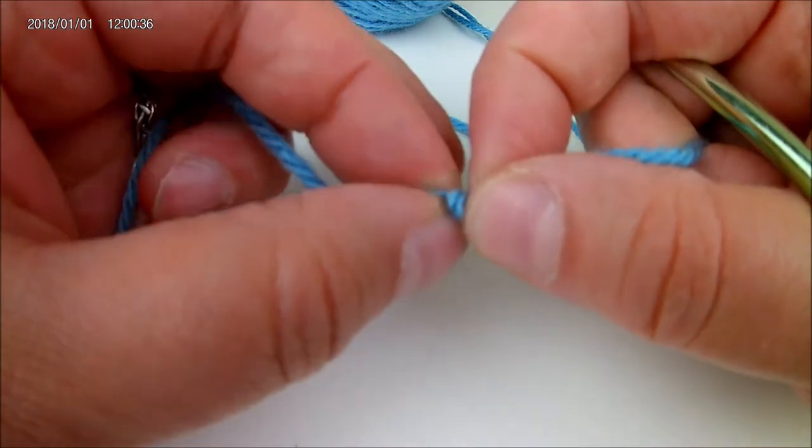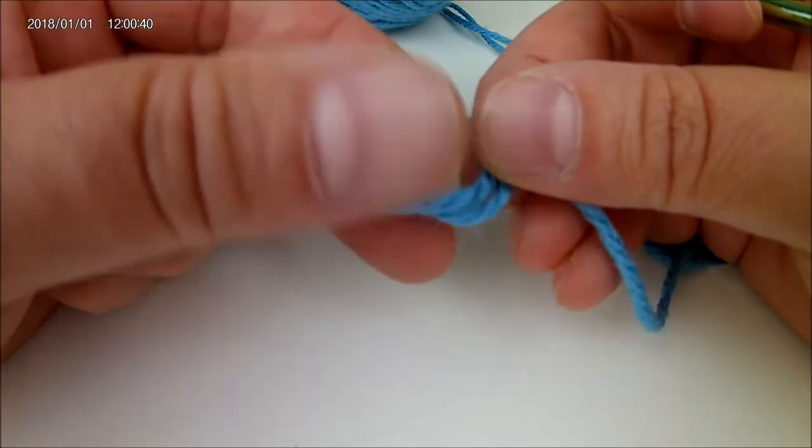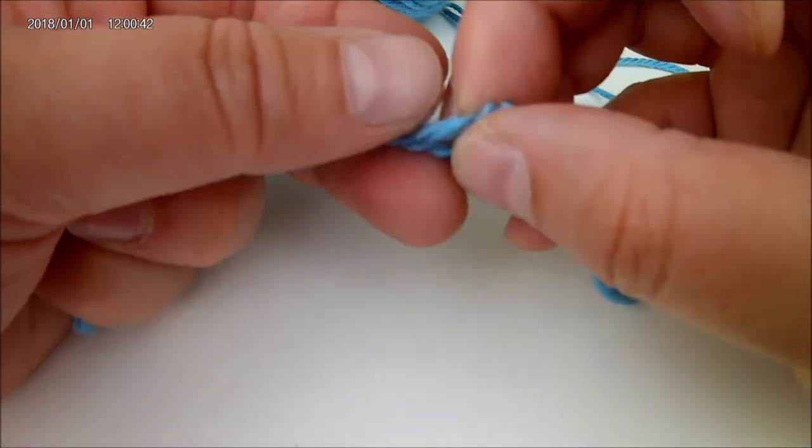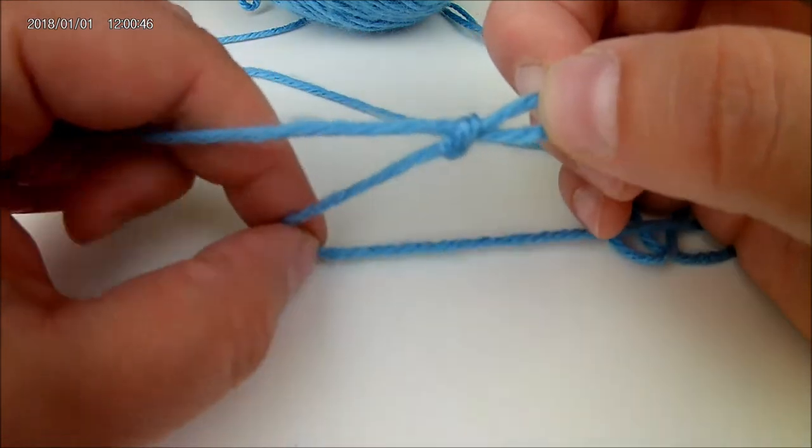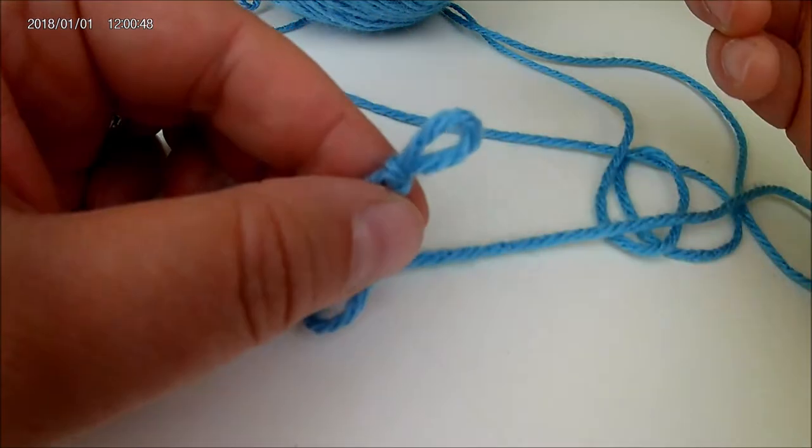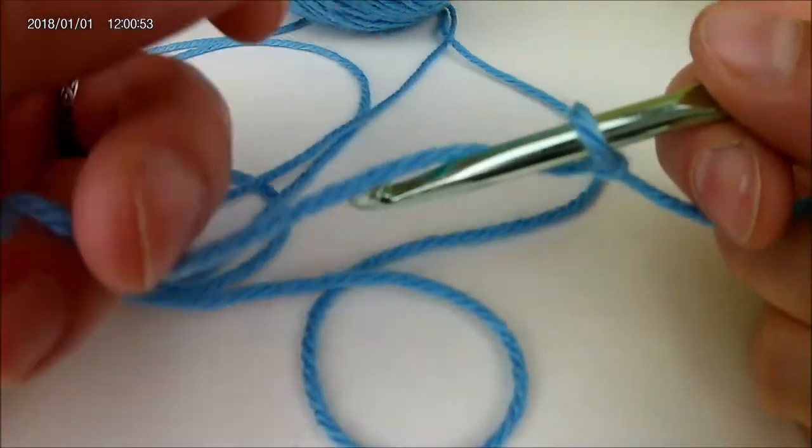We're going to start by making a slip knot. Place your hook through the loop and then hold that tail and gently pull the yarn so that it tightens.